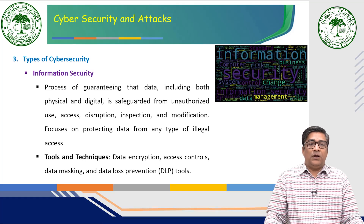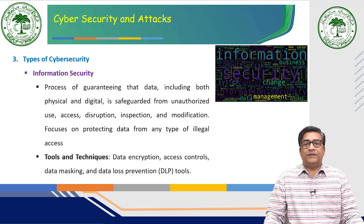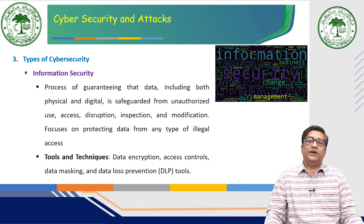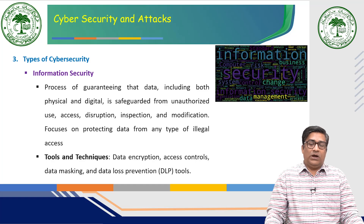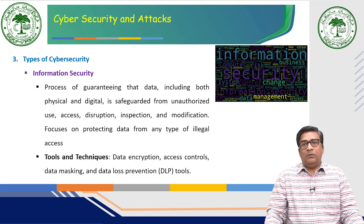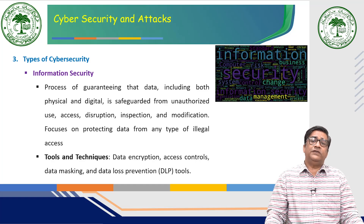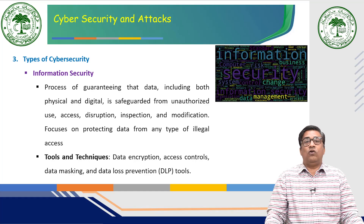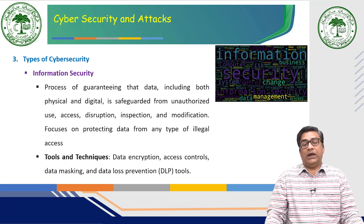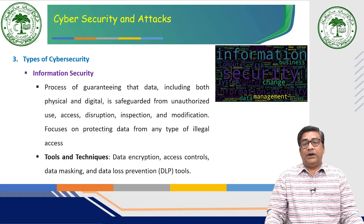The next type is information security. This discipline is centered on ensuring that both physical and digital data is protected from unauthorized use or access, disruption, inspection, and modification. The primary goal of information security is to safeguard data from any form of illegal access, thereby maintaining its confidentiality, integrity, and availability. Tools and techniques used include data encryption, access control, data masking, and data loss prevention.